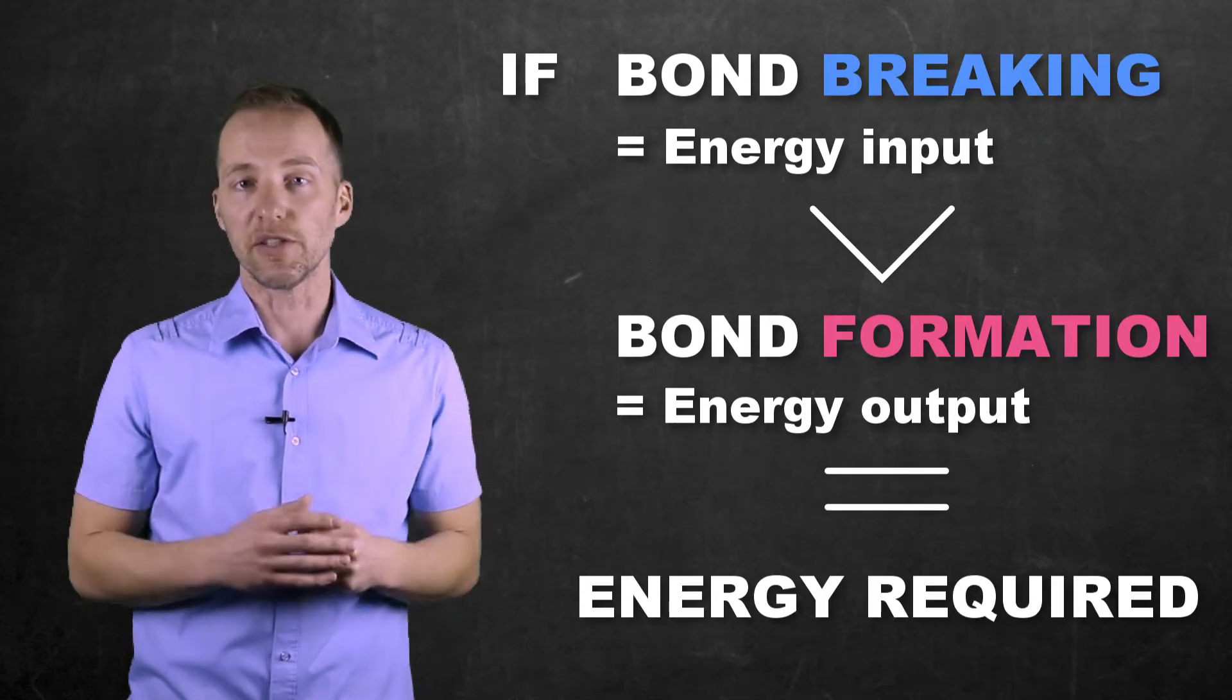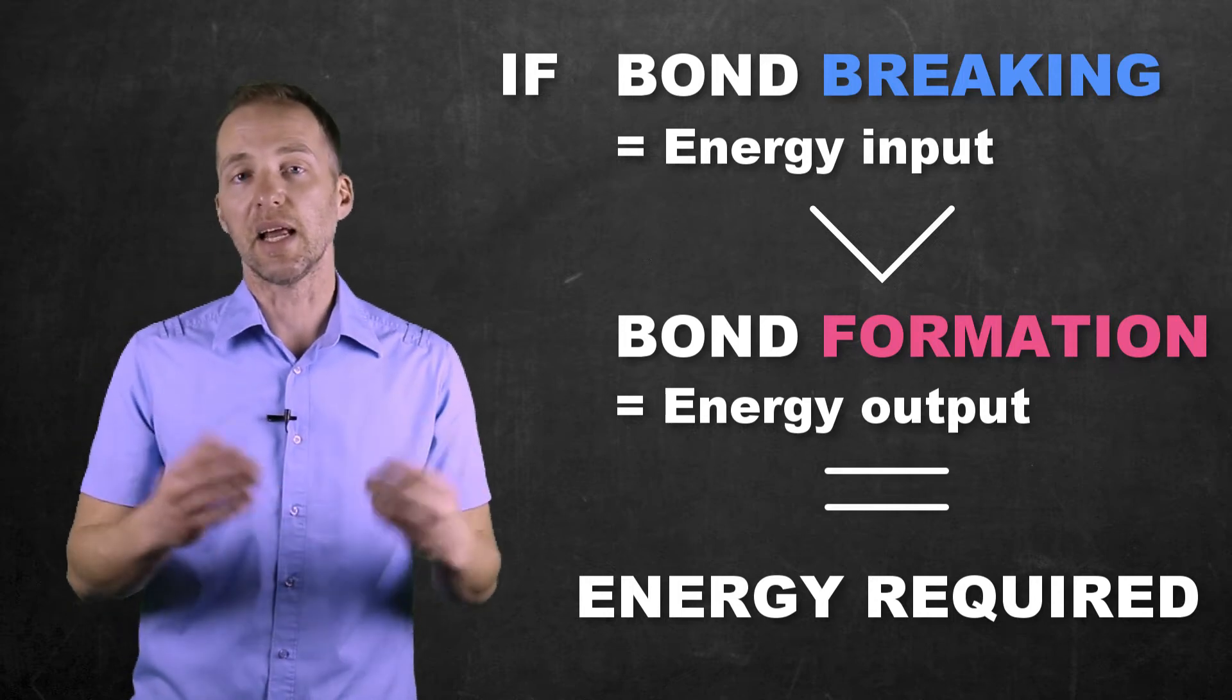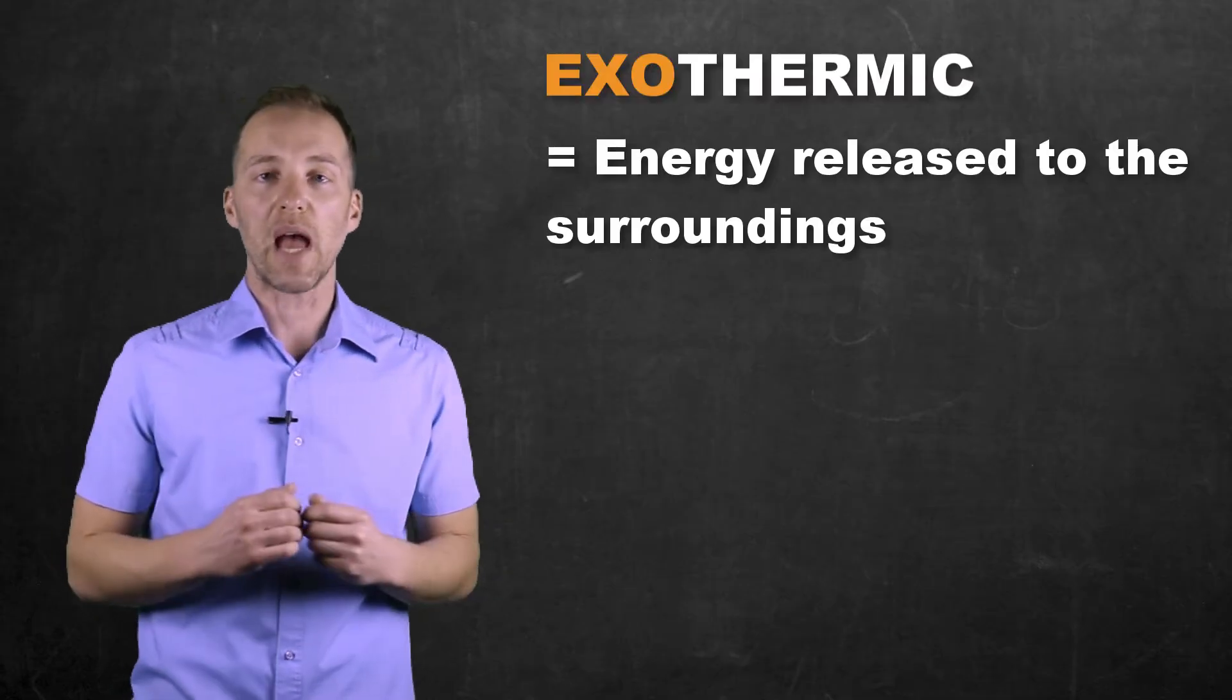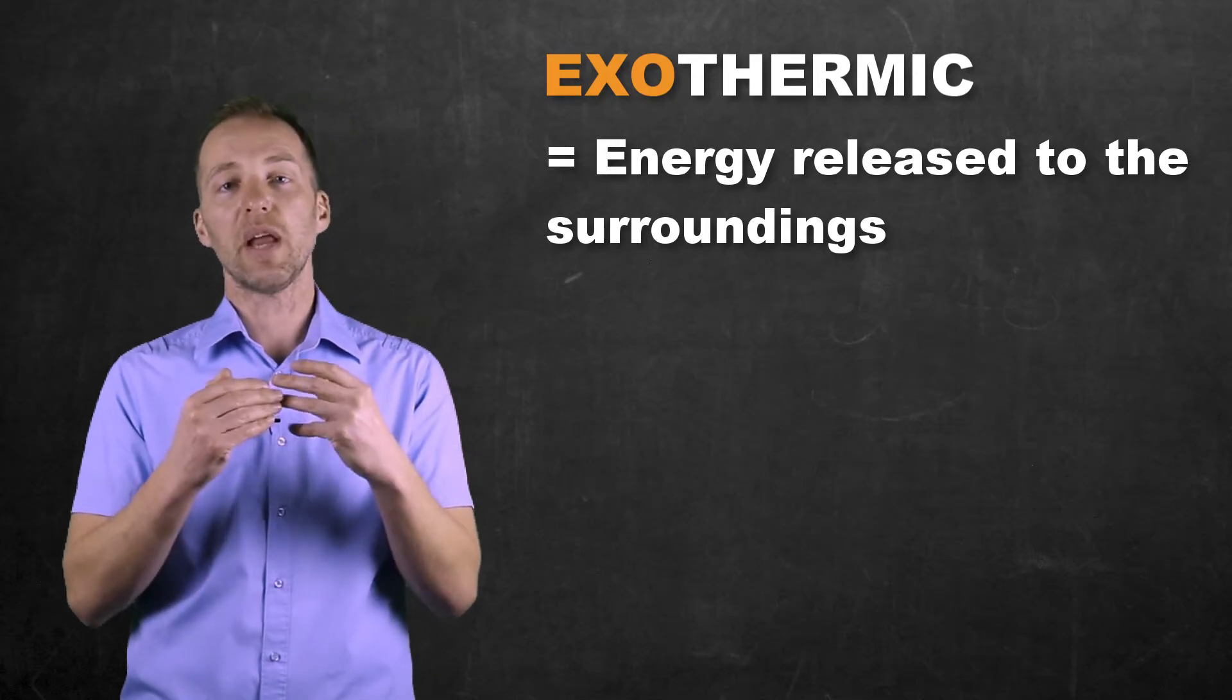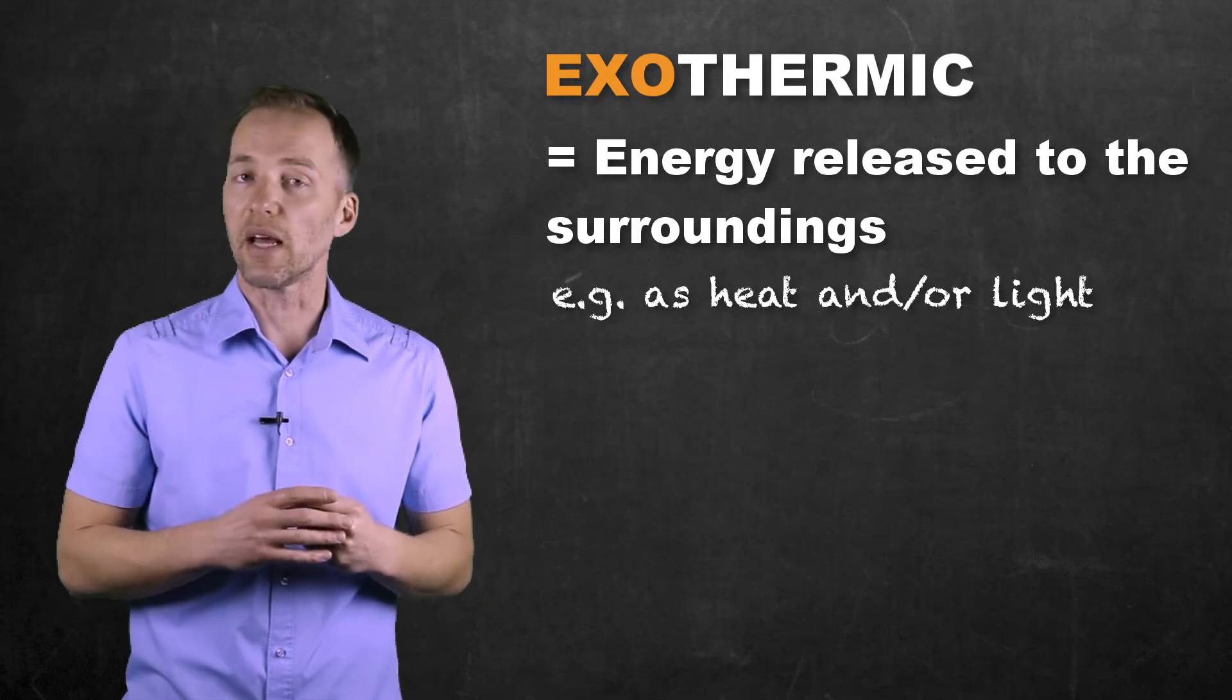And if there's a net release of energy to the surroundings, especially if it's a large amount, we're going to get heat and light being produced. And this type of reaction is something that we call an exothermic reaction. Think about things exiting or leaving. So in this case, we're talking about energy or heat being lost to the surroundings, and we sometimes see that in the form of heat or light.